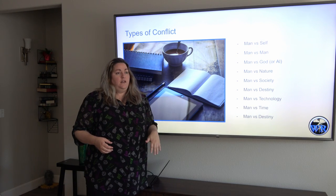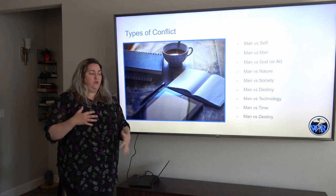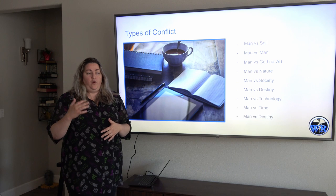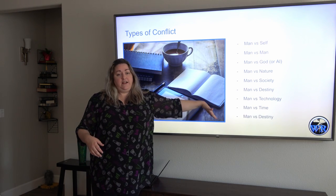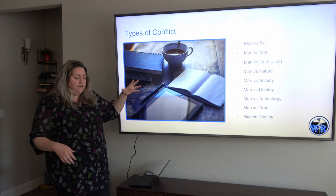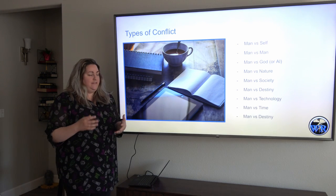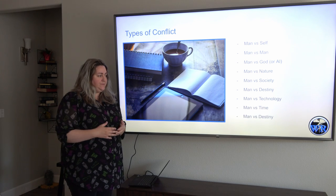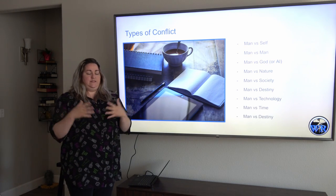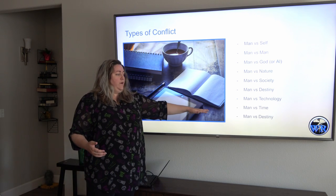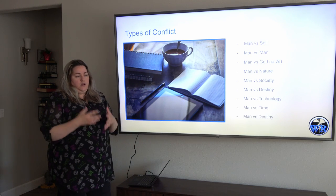You have man versus destiny. That's any time your character is fighting against what they are destined to do and trying to avoid — maybe it's a prophecy that they're trying to avoid or something like that. A lot of Greek myths are man versus their destiny. You have man versus technology. We separated this from AI because AI becomes a being on its own. Technology is not sentient, but they are still fighting whatever that technology is. Then you have man versus time — they're running out of time. A good example would be a story where somebody has a deadline to their life, and they're trying to avoid it or push it back.